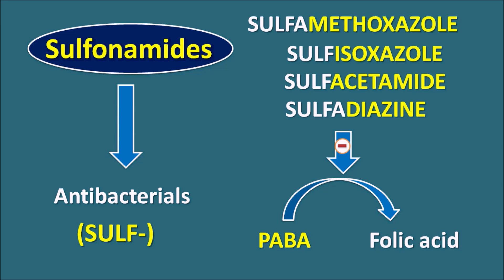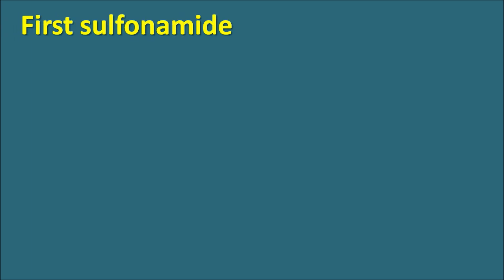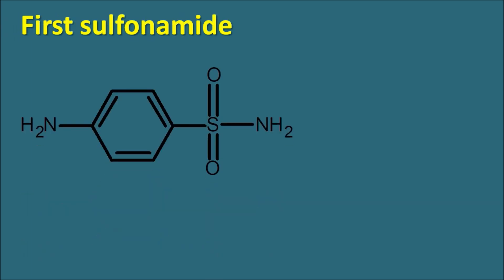Because of this structure, sulfonamides can also produce crystalluria as an important side effect. Today we will explore how crystalluria is produced, how it can be minimized, and what structural modifications can be made to reduce it. The first sulfonamide developed has a simple structure.